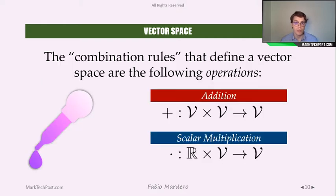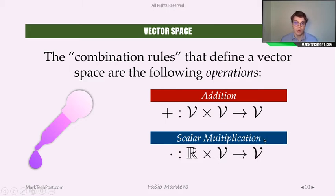Those combination rules, mathematically speaking, are called operations. A vector space is defined with two operations: addition and scalar multiplication. With addition, we take two vectors — two elements of the vector space — and the operation returns one vector. In scalar multiplication, we take one real number and a vector, and the operation returns a new vector.